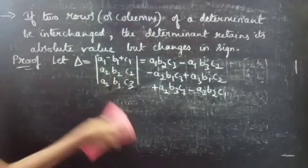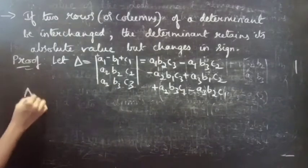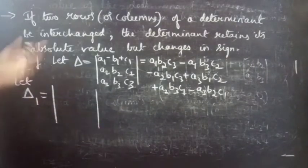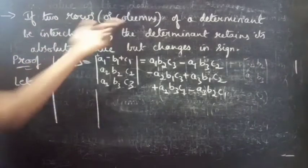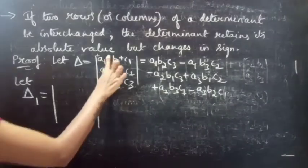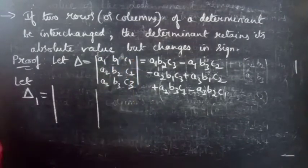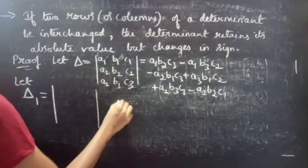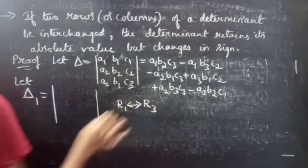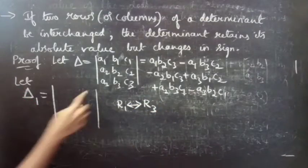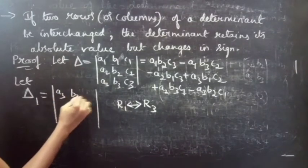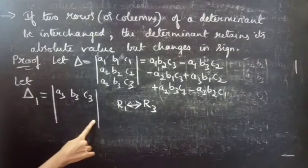Now we are going to write delta1 according to the given statement. We have to change any two rows or columns. Here we will change rows — we are going to interchange R1 and R3: in the place of R1 write R3, and in the place of R3 write R1.